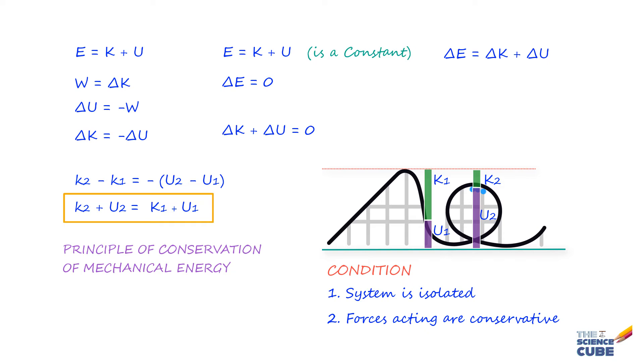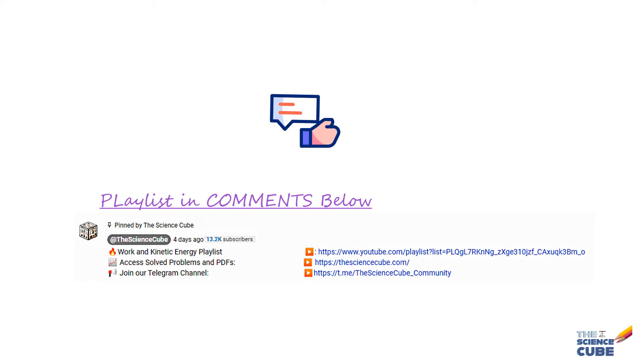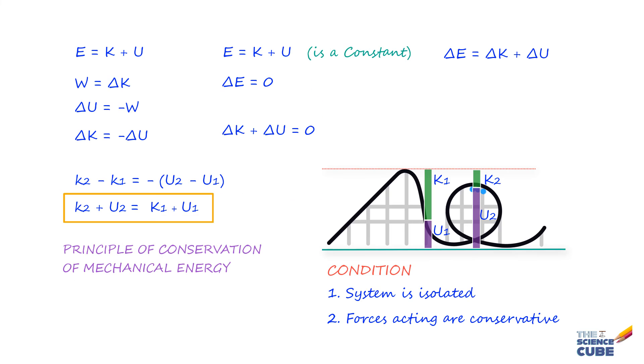So another interpretation could be the sum of change in kinetic energy and potential energy will be 0 if a conservative force acts on a system. So if you like the way I am teaching, do give a thumbs up. That will be helpful. And let us get back to the lesson.